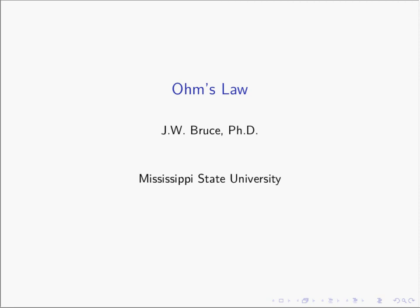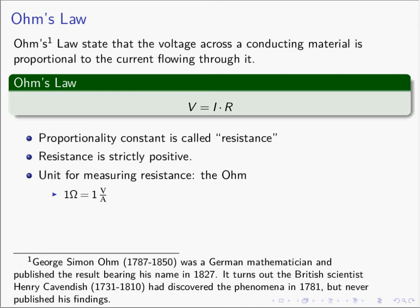Today we're going to be talking about Ohm's Law. It's one of the fundamental laws that we use quite a lot in our discussion of electrical circuits. Ohm's Law states that the voltage across a conducting material is proportional to the current flowing through it — V is proportional to I. Whenever we have a linear proportionality, we can define a proportionality constant, and for us that proportionality constant is going to be resistance. The resistance R is a strictly positive number and is the constant that relates the current to the voltage.